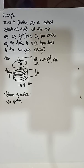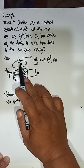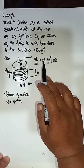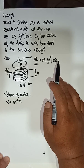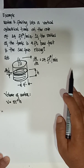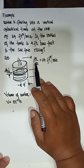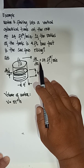We have an example for time rates. Water is flowing into a vertical cylindrical tank at the rate of 24 cubic feet per minute. If the radius of the tank is 4 feet, how fast is the surface rising? Since the unit is cubic feet per minute, that is a volume rate — so that is dV/dt.